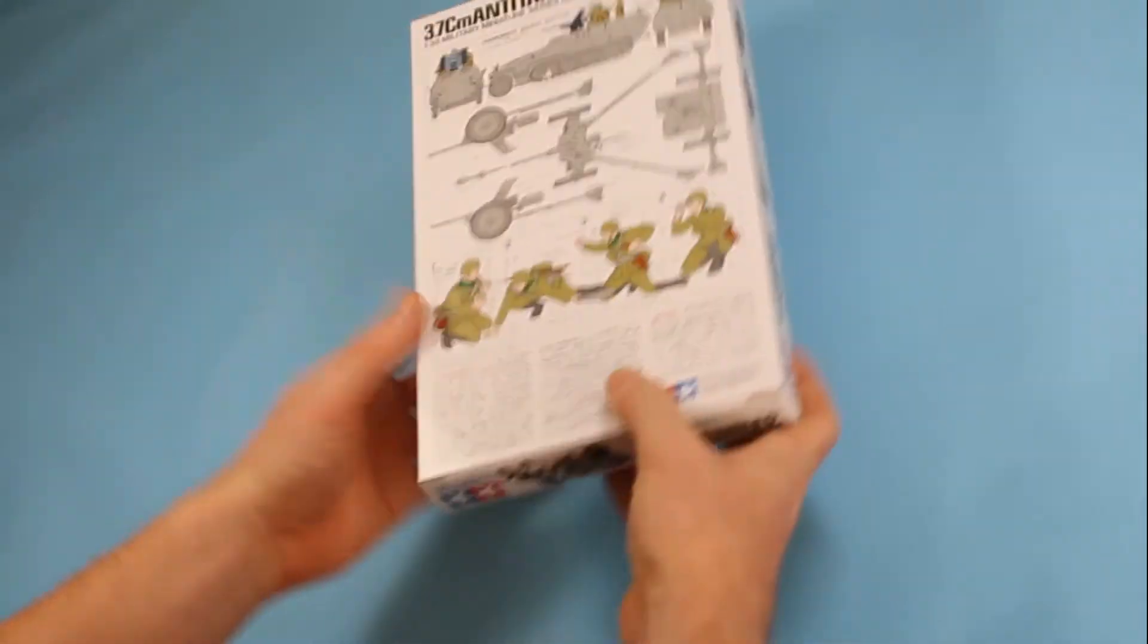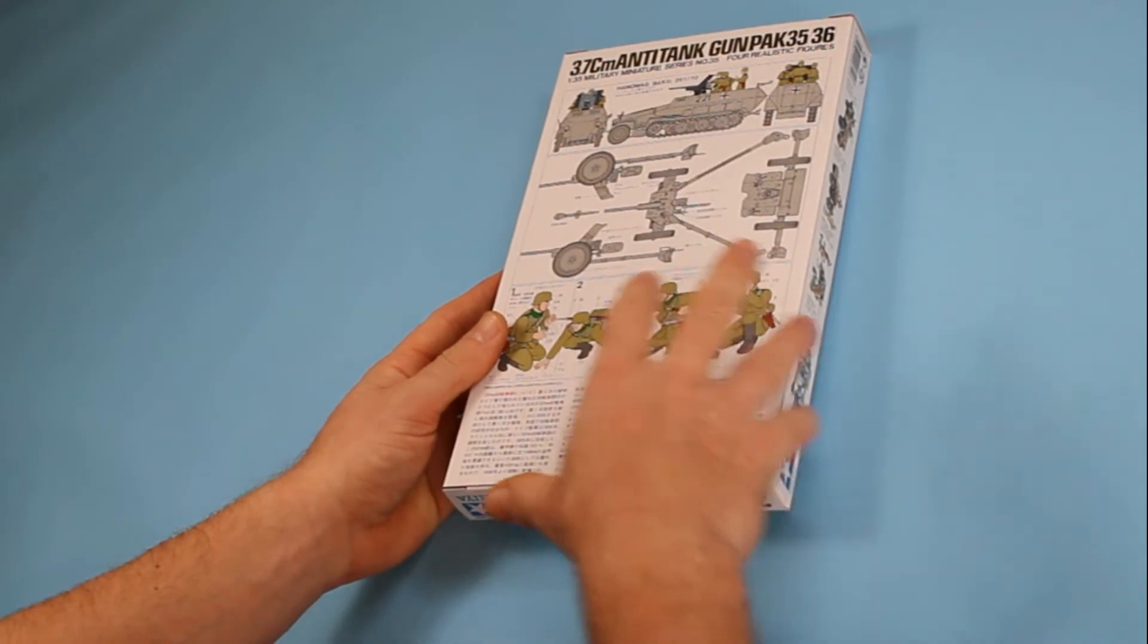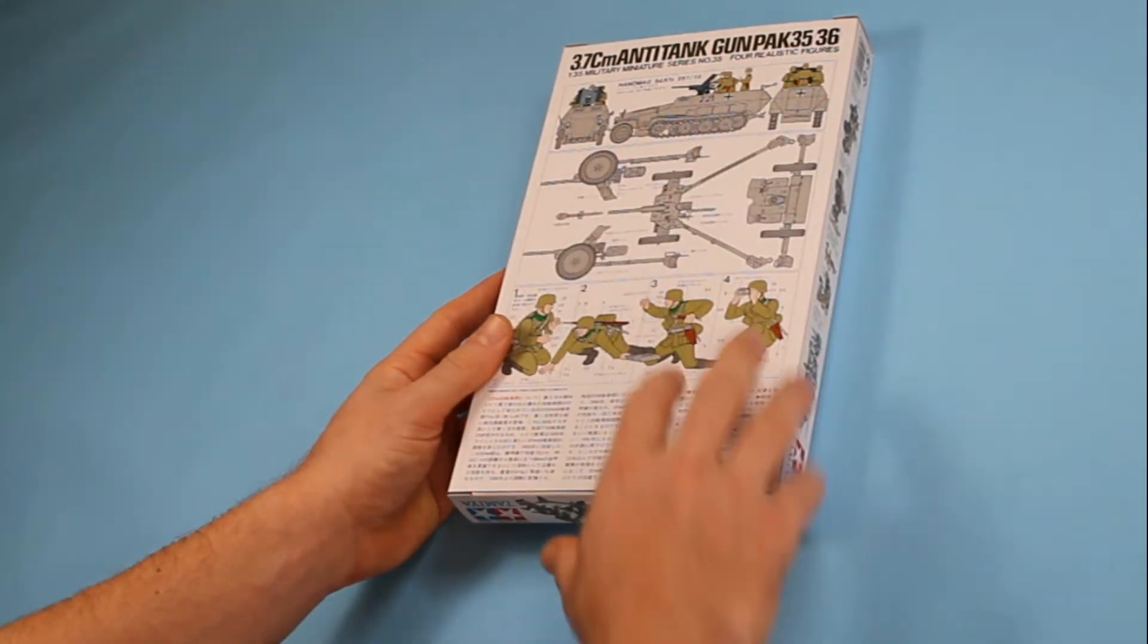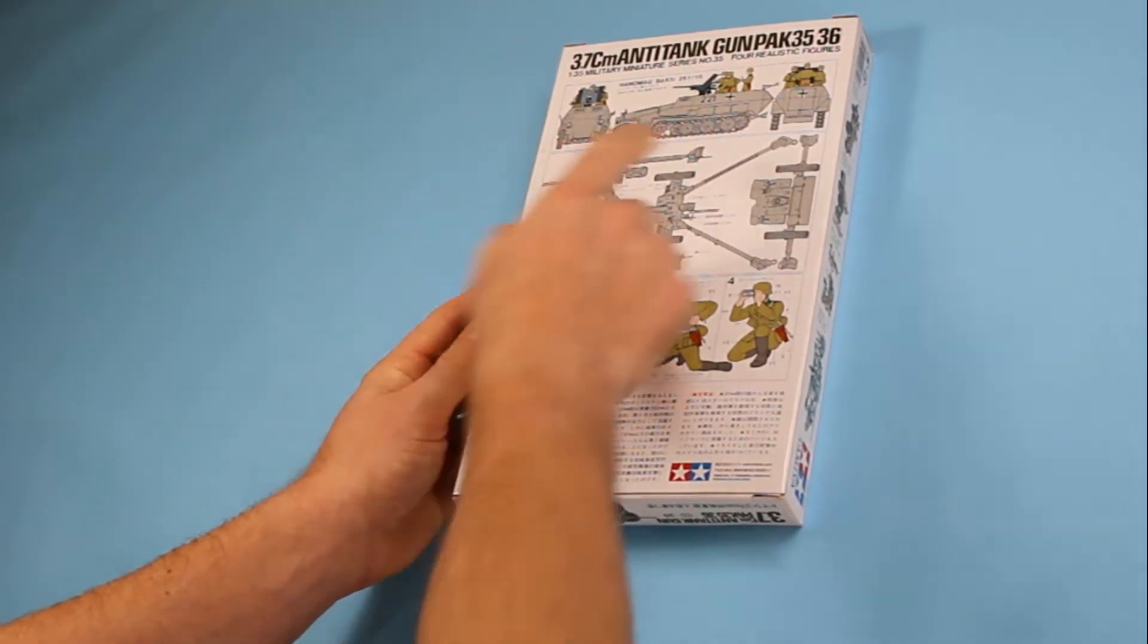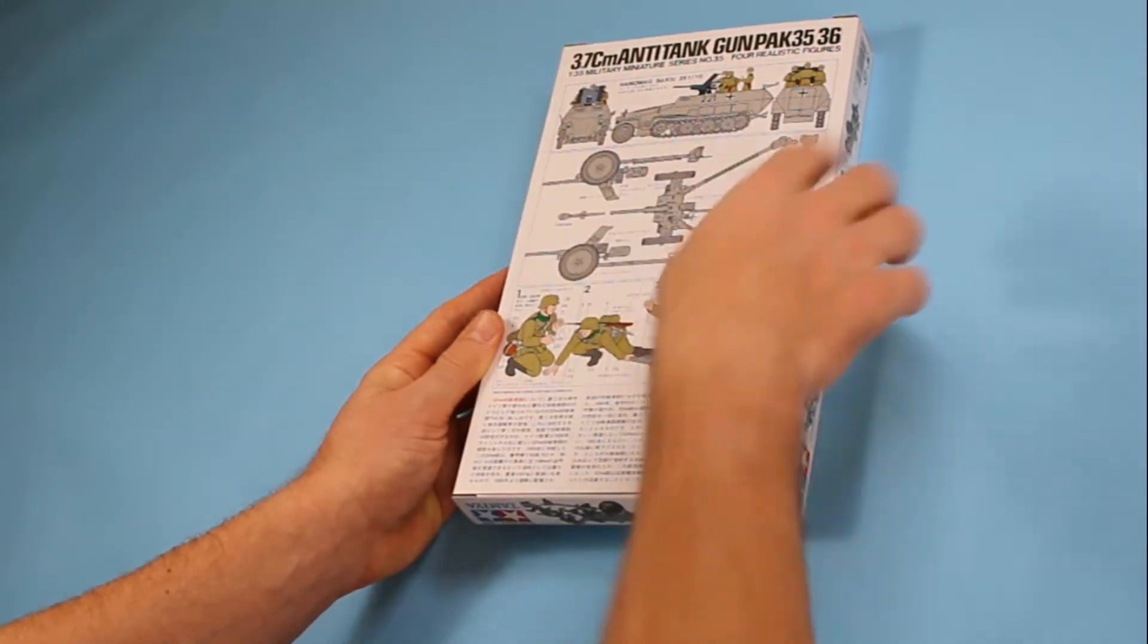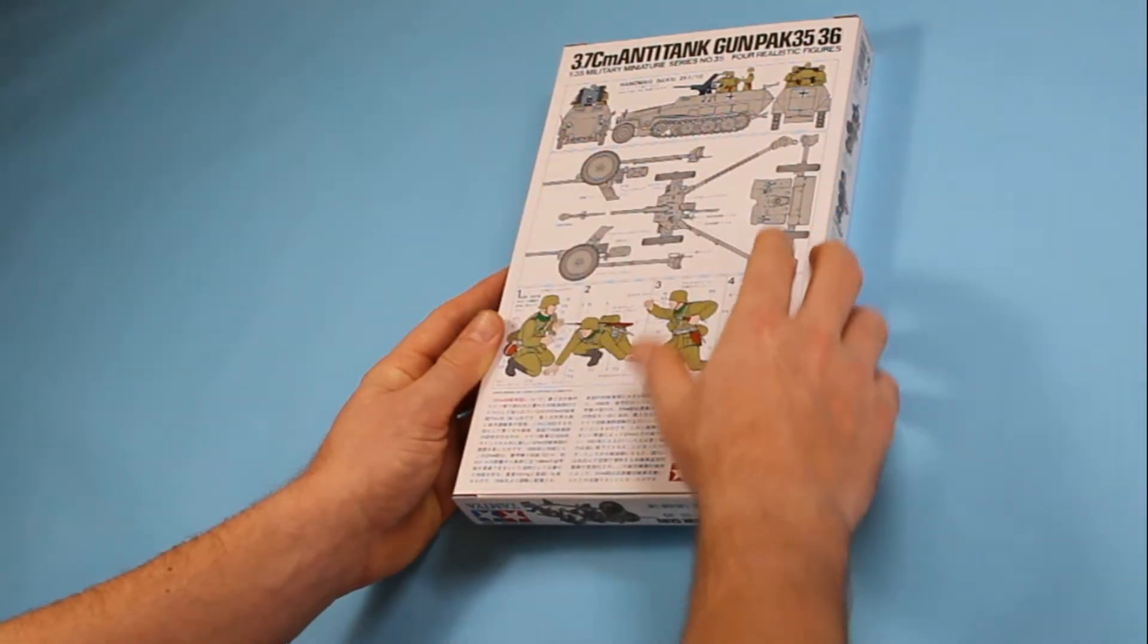Starting with the box, it's quite a small box but as is the case with older Tamiya kits you do get quite a lot of information on the box. On the back here you can see that it goes hand in hand with their Hanamag which is in the same series of the older types.